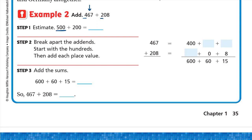For 208, look at the digit to the right of the hundreds place — it's 0. Zero is a weak digit, so we keep it 200. So 500 plus 200 is 700, and our answer should be close to 700.